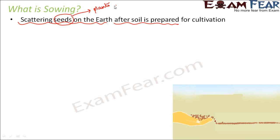Sowing is the most important part because the seeds actually decide what kind of plants will come up. If good quality plants come up, then the productivity will be more. If bad quality plants come up, then the productivity will be bad. So plants can't grow without the seeds. Selection of seeds and scattering of seeds both are equally important, and they both form the part of sowing.